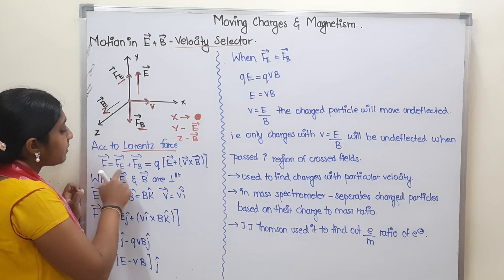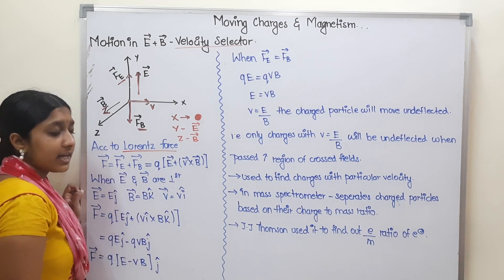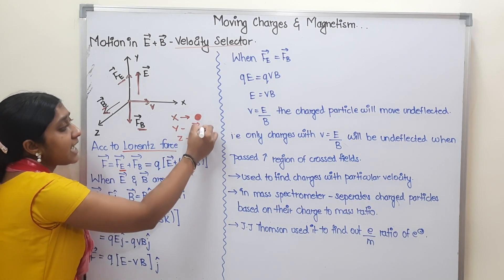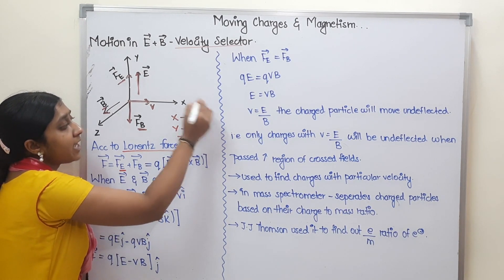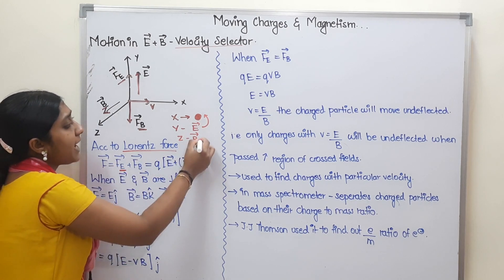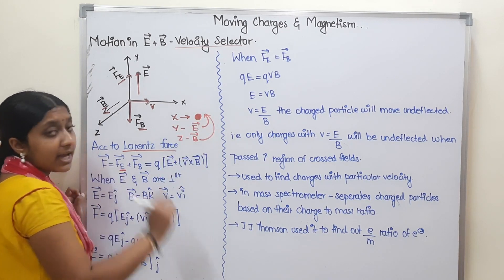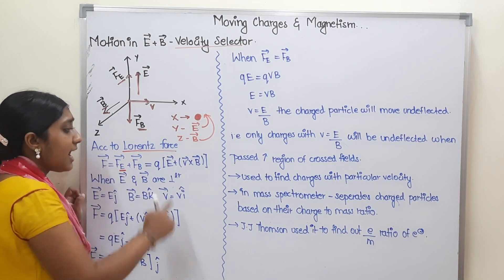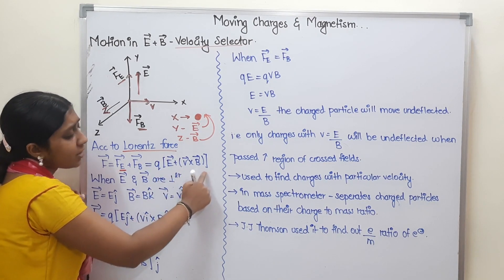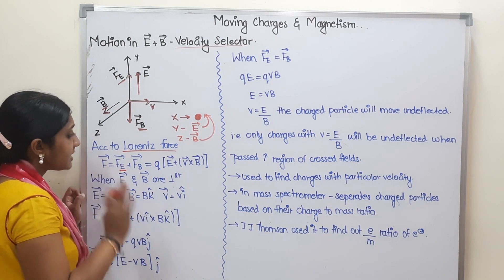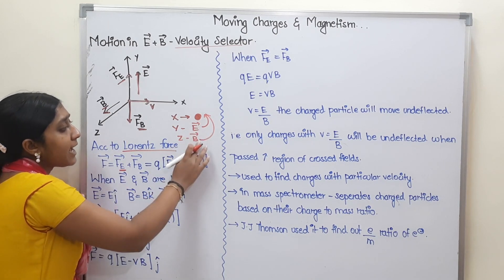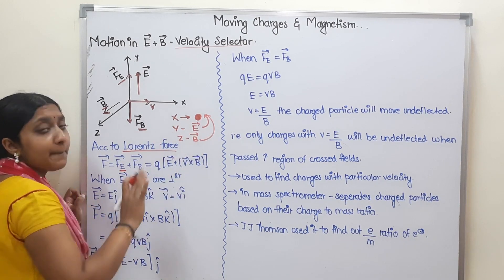F vector is equal to F_e plus F_b vector. F_e means the electric force on the charged particle. That is plus the magnetic force F_b. That is the formula: Q times (E vector plus v cross B). Suppose this case — electric and magnetic field are perpendicular.